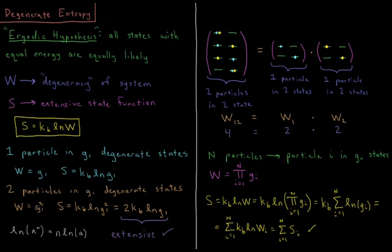Why is it that the degeneracy goes up with the power of the number of particles? Let's look at an example here. We have our two states, and then different scenarios for where those two particles could be in those two states. One particle is light blue, the other is yellow.